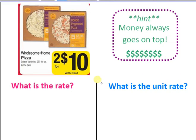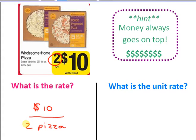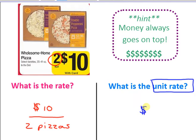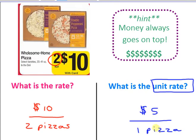Let's look at another example — pizzas. The rate is $10 for two pizzas. Now, what is the unit rate? The unit rate means one on the bottom. So divide: 10 divided by 2 is $5 for one pizza. Unit rate means I'm going to have the number one on the bottom. My units are still different — dollars on top, pizzas on the bottom — but the bottom is one. I'm finding how much it costs for one.